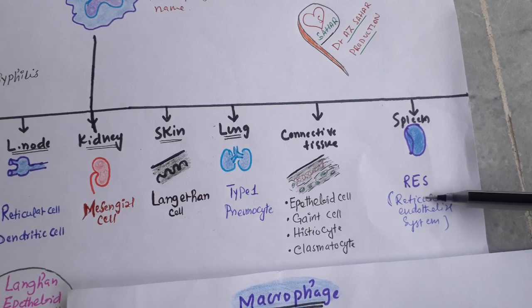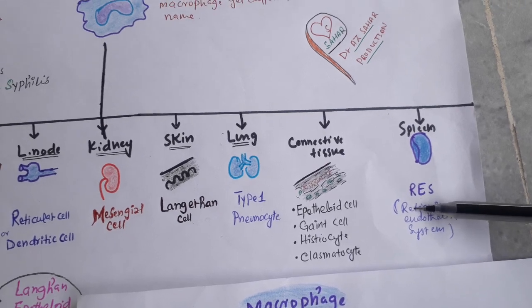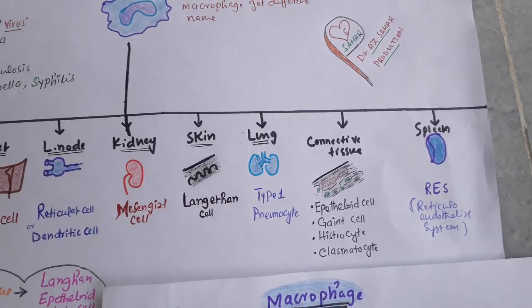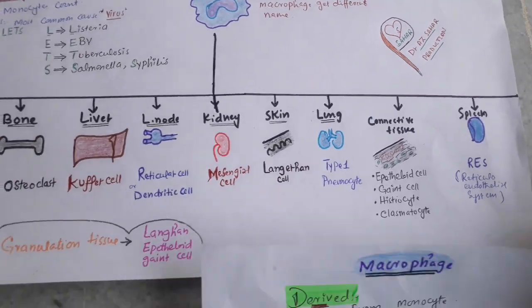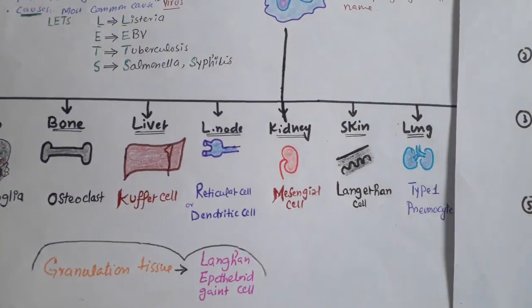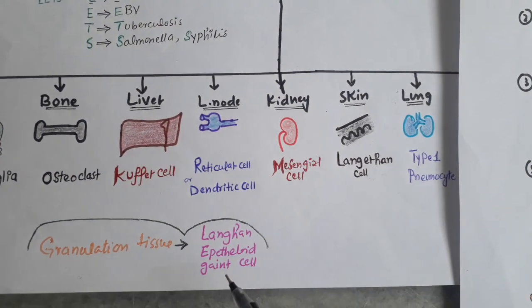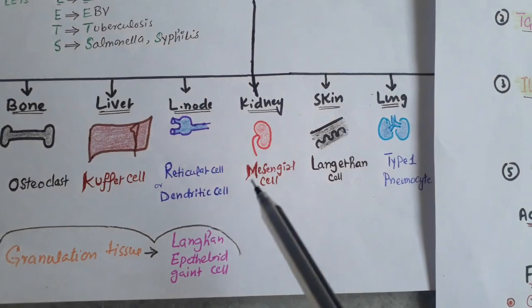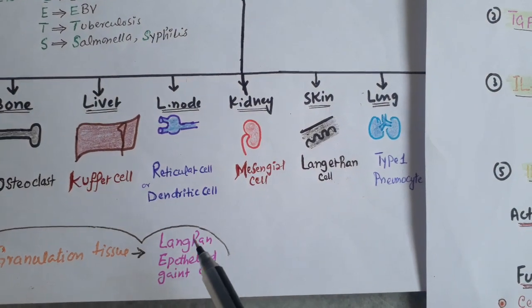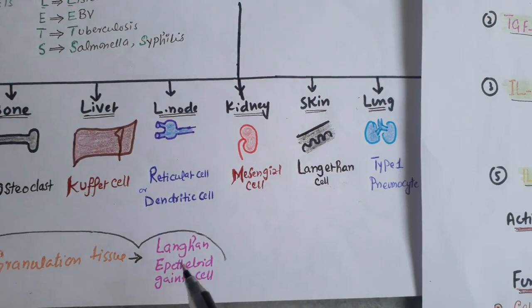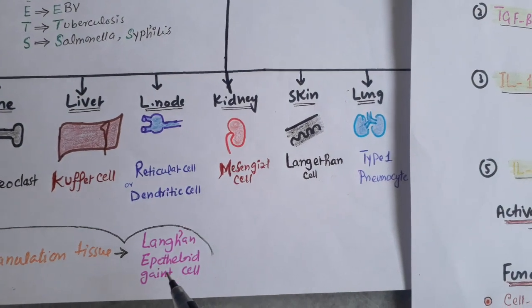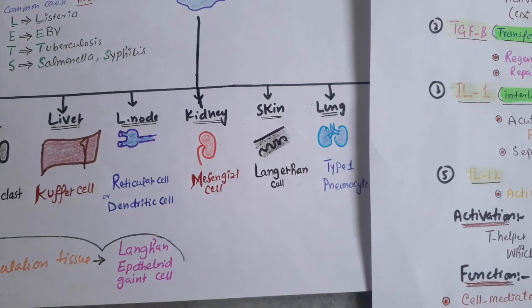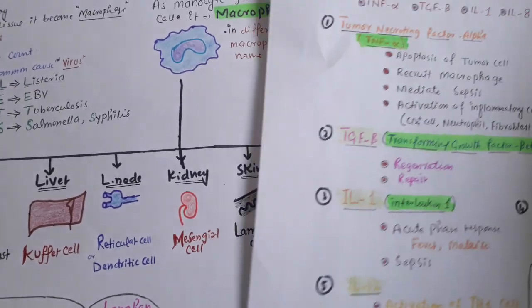In the spleen, we can call it the reticuloendothelial system. In granulation tissue, there are different names such as Langerhans cell, epithelioid, and giant cell.